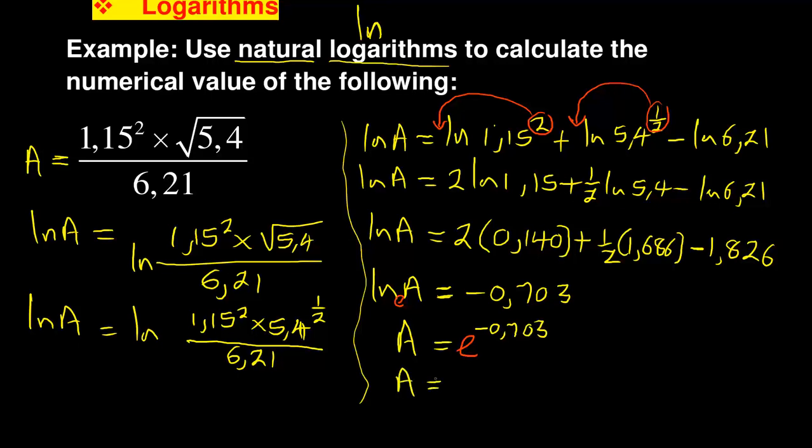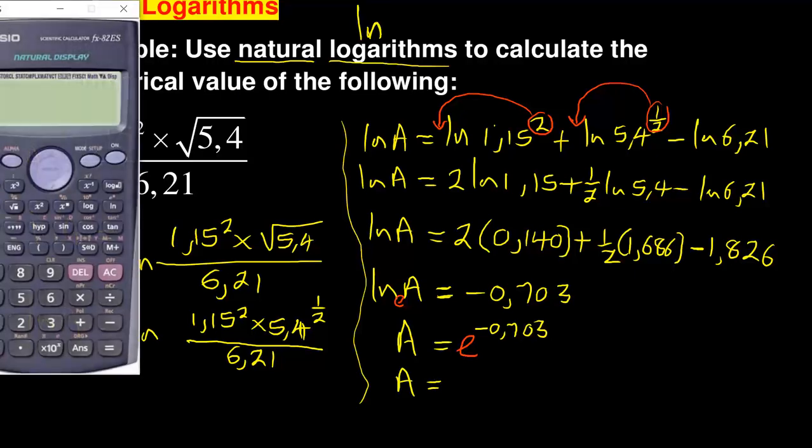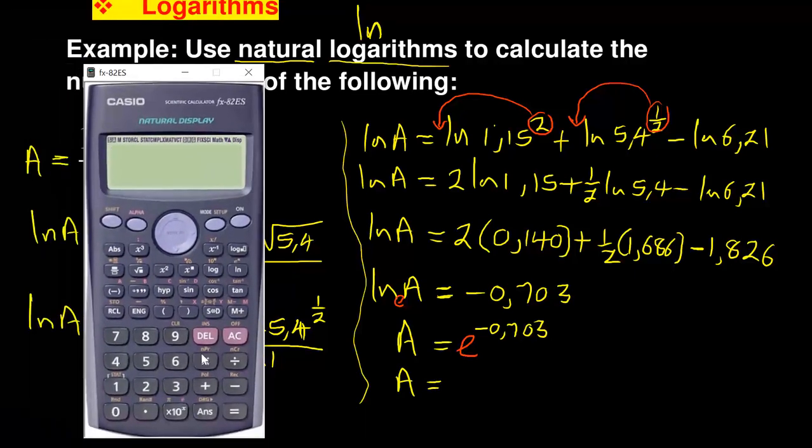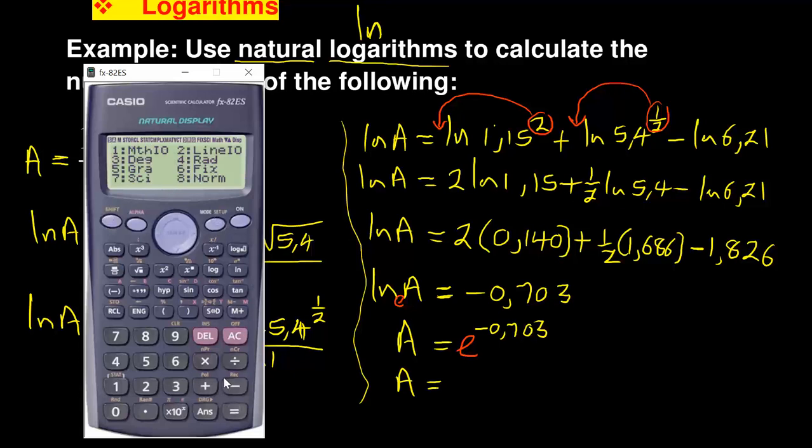So that you can say A equals - and now you say shift and there is e to the power negative 0.703, which is 0.495. You can round off to three decimal places which is 0.495.